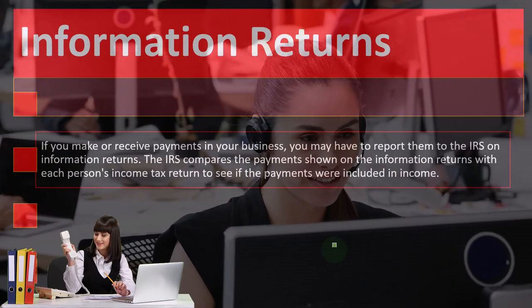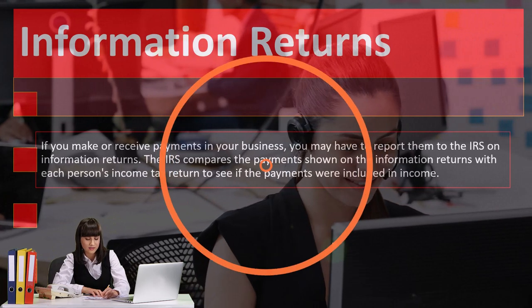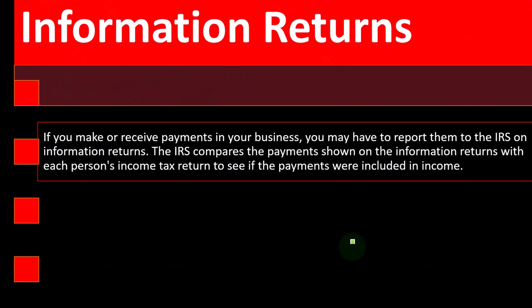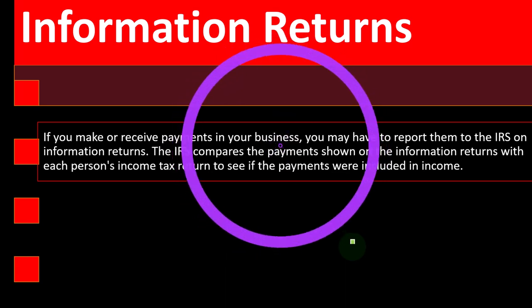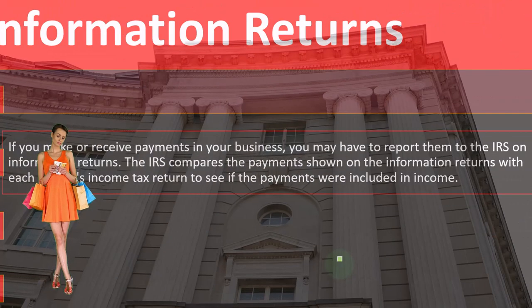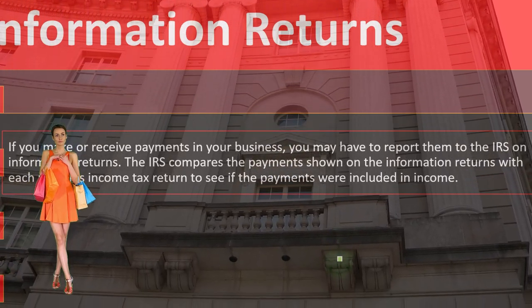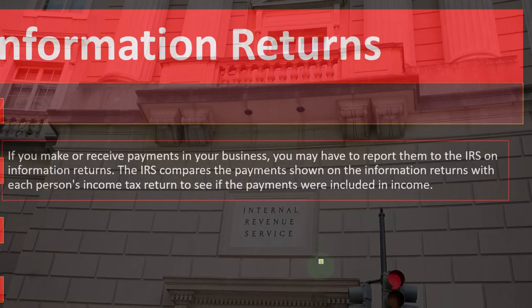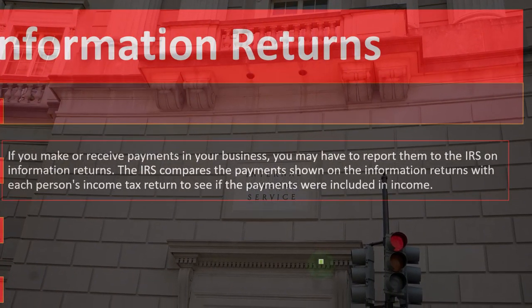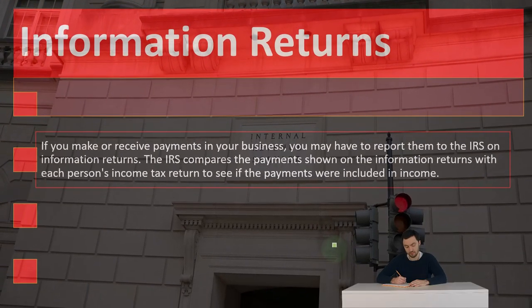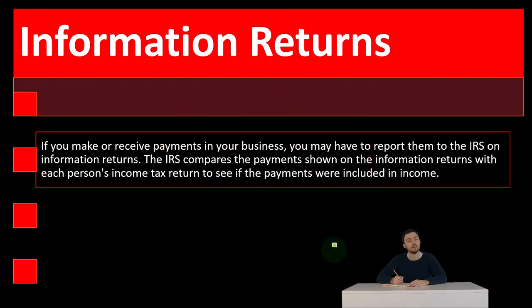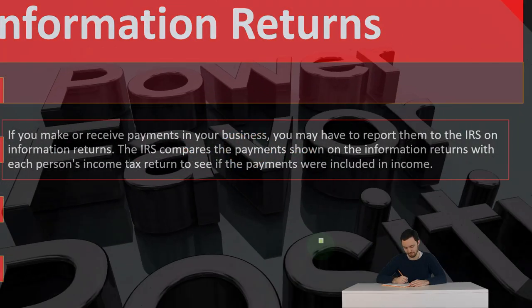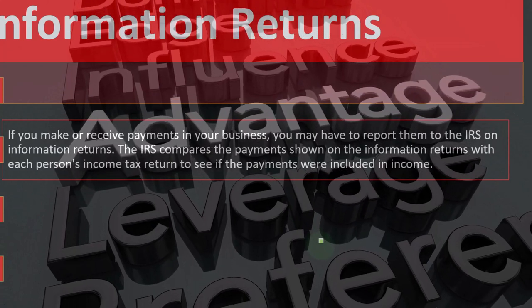The IRS has leverage on the payer in the transaction because they're the one that wants the deduction. The IRS can say: if you want the deduction, we want you to report the income to us — who you are paying. This is most clear in an employee-employer situation, where the IRS wants businesses structured that way so they can have the most control over the employer to not only report the income paid to employees, but also do the withholdings on the government's behalf.